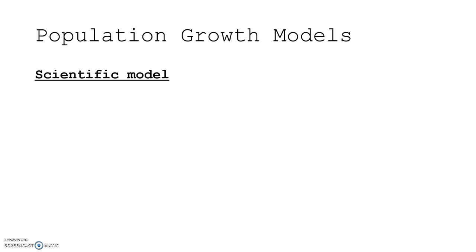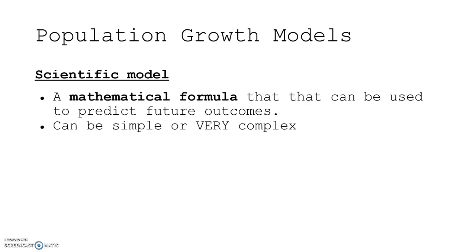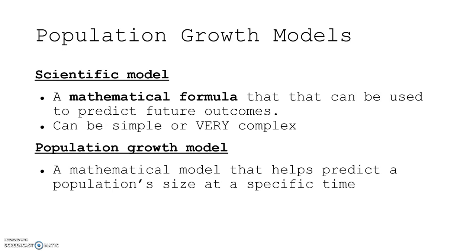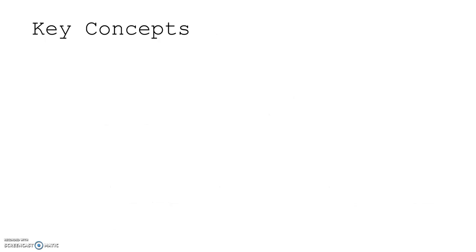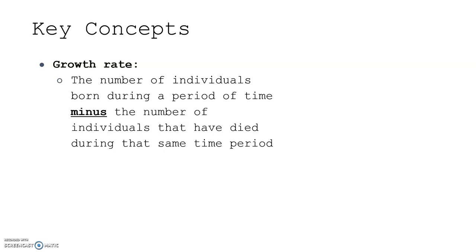Population growth models. A scientific model is a mathematical formula that can be used to predict future outcomes — they can be simple or very complex. A population growth model helps to predict a population size at a specific time. In population ecology, we have two basic models: the exponential growth model, often referred to as a J curve, and the logistic growth model, often referred to as an S curve. Growth rate is the number of individuals born during a period of time minus the number of individuals that have died during that same time period — births minus deaths.